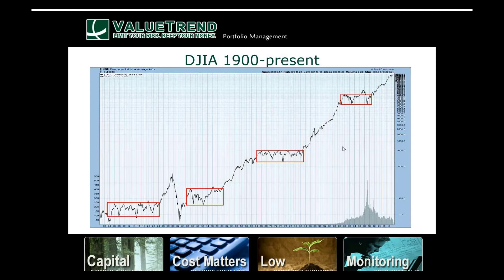Here we have the Dow Jones Industrial Average since 1900. You can see there have been many periods of sideways consolidations where the market is contained between a support and resistance level. You draw these lines with a crayon because sometimes you'll see breakdowns below support, but the main thing is the pattern. For example, there was a breakout here, but it was a false breakout — it went right back into that zone before it finally broke out for real back in the 1940s, after the 1929 crash and the Great Depression.